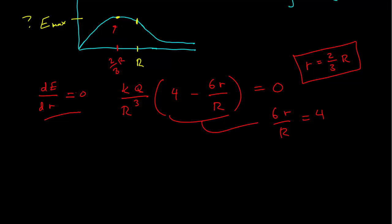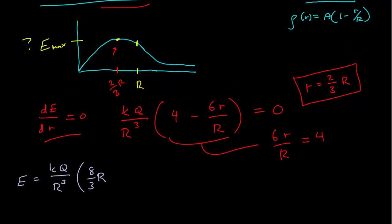And so now, we just need to know what that is. So we just plug that back into our expression for the electric field, and that's then KQ over capital R, the radius cubed. We get 8 thirds times R, because that was 4R. Then we have 3R times small r squared, which would be 4 ninths times R.